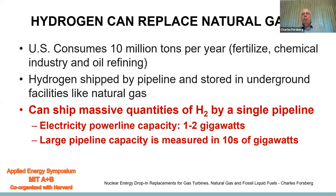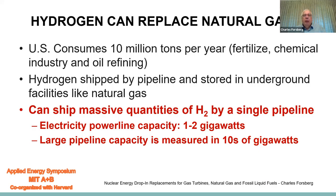Hydrogen can replace natural gas. Currently the U.S. consumes 10 million tons of hydrogen per year to make fertilizer, chemicals, and for oil refining. Hydrogen can be shipped by pipeline and stored in underground facilities like natural gas. Particularly important, we can ship massive quantities of hydrogen by a single pipeline. Electricity power line capacities are typically one to two gigawatts, whereas a large pipeline capacity is measured in tens of gigawatts — an order of magnitude larger — and that has some potentially very large implications.